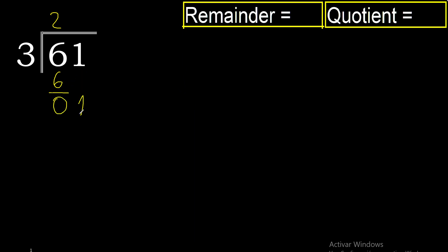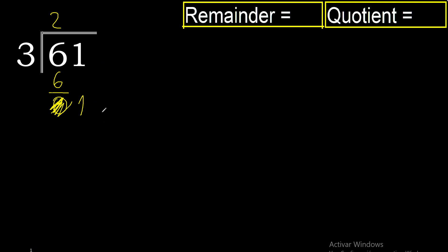Bring down 1. 1 is less than 3, therefore complete with another number, but there is no number that goes down, therefore finish. Complete here with 0.